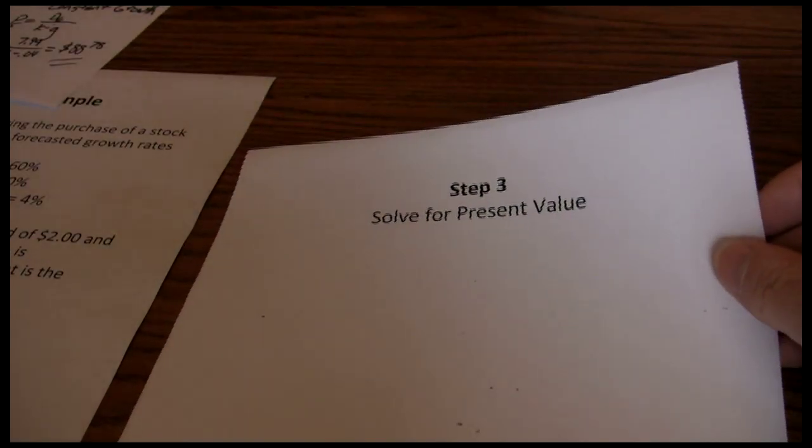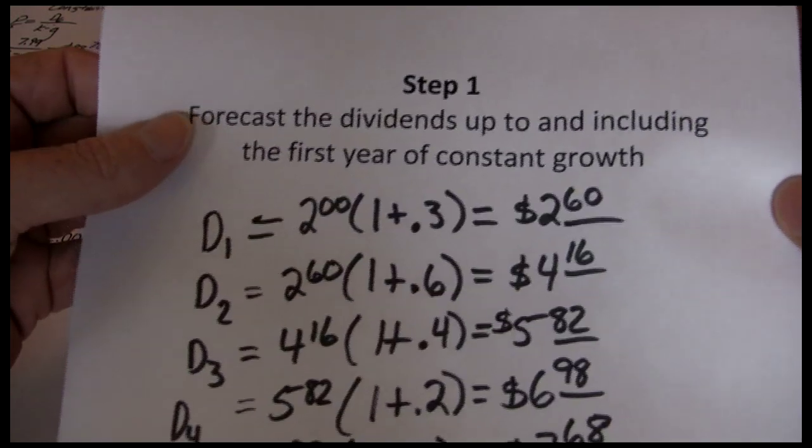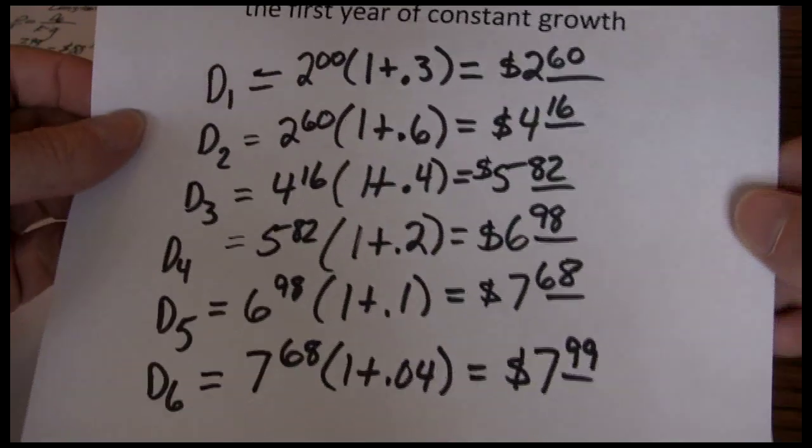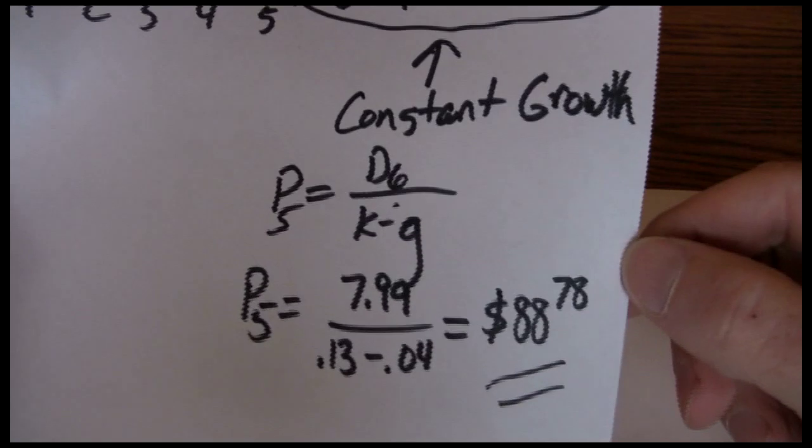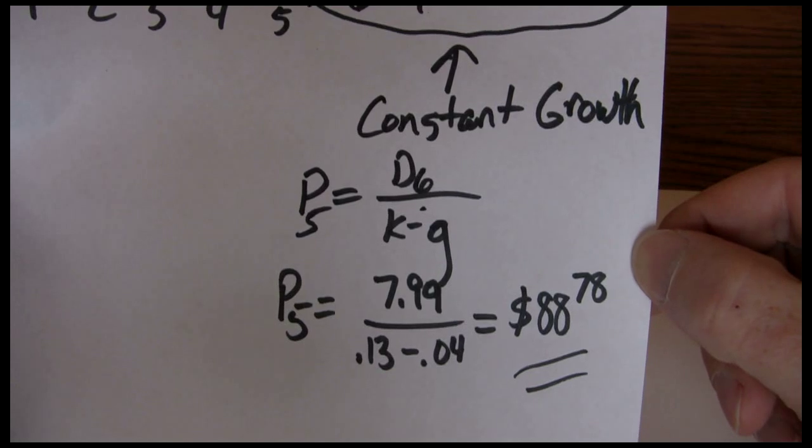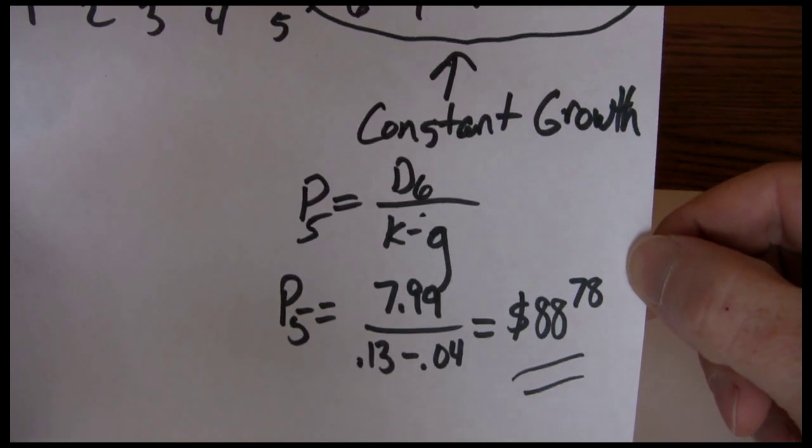In step one, we forecasted the dividends up to and including the first year of constant growth. In step two, we used the constant growth model to find the value of all the dividends during the constant growth stage.